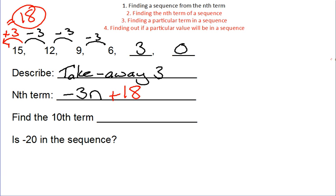The 10th term, so that's going to be, just like before, minus 3 times 10 plus 18. So, that's going to be minus 30 plus 18 is minus 12.